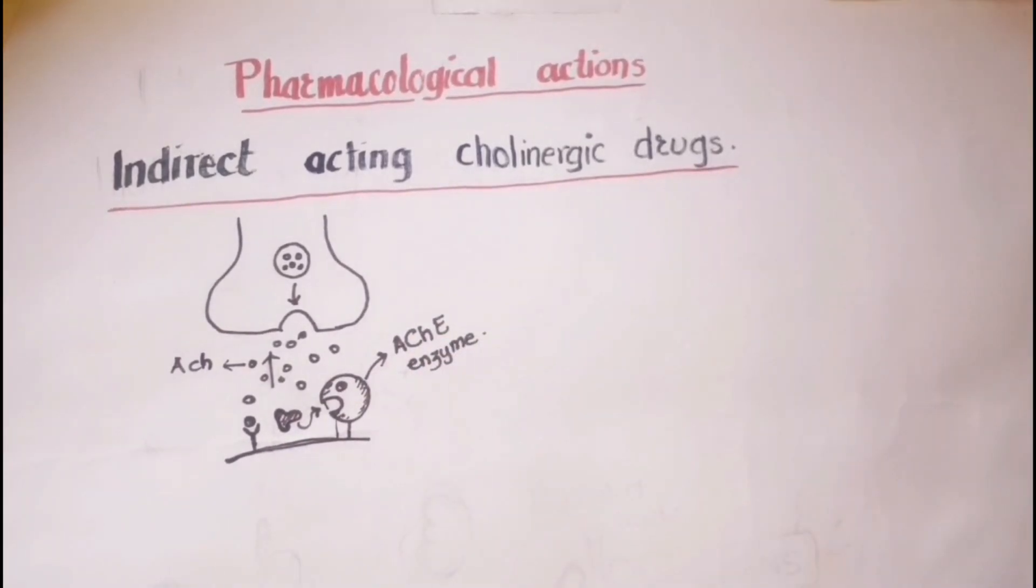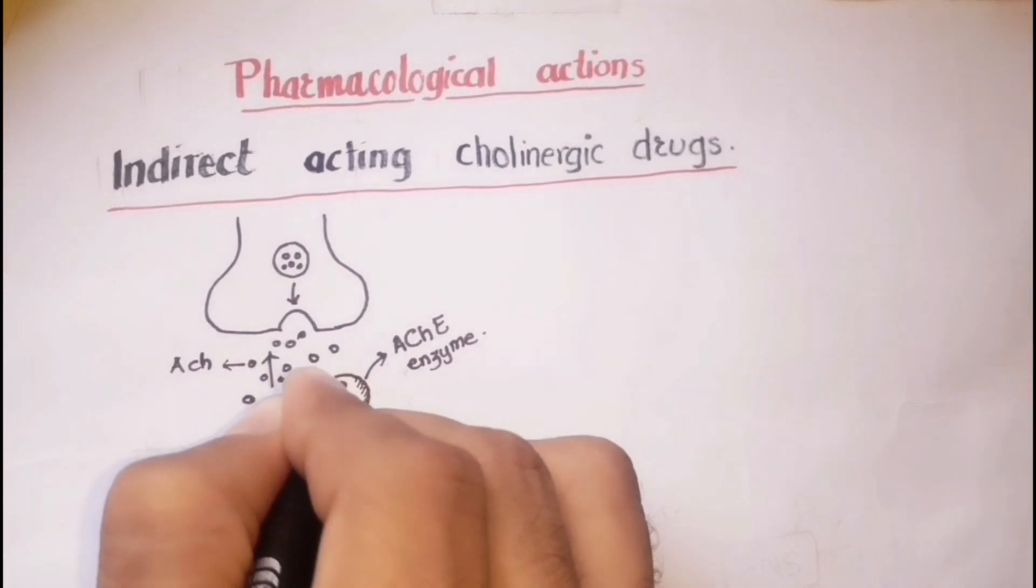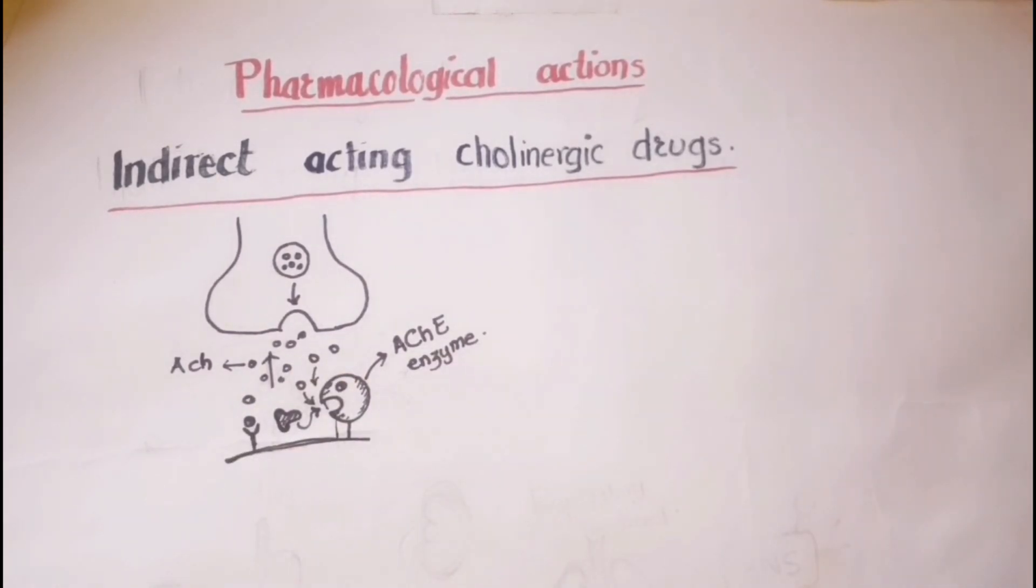So, inhibiting this enzyme will result in increased concentration of acetylcholine in the synaptic cleft with increased acetylcholine actions on receptors subsequently.